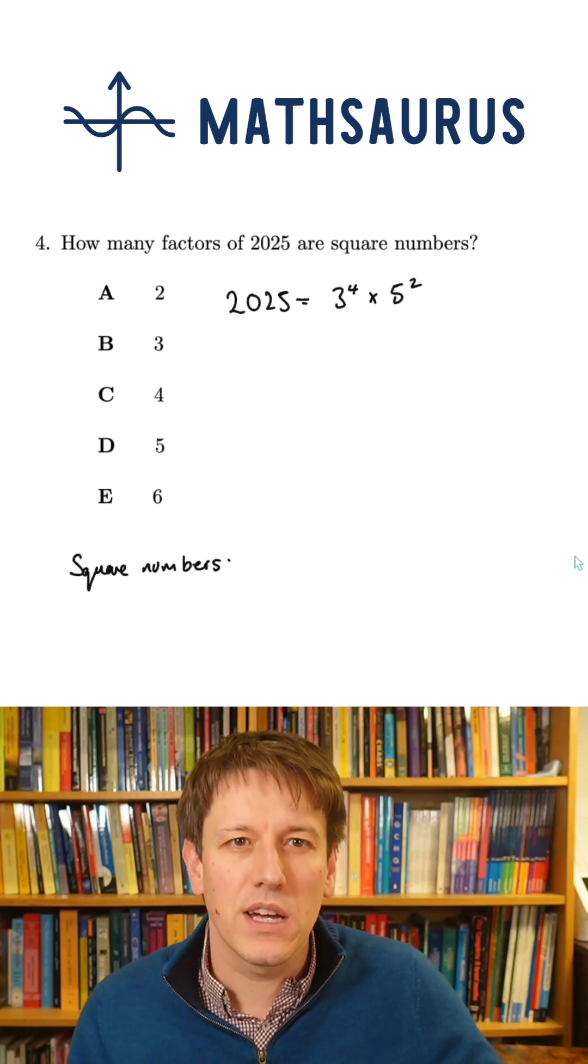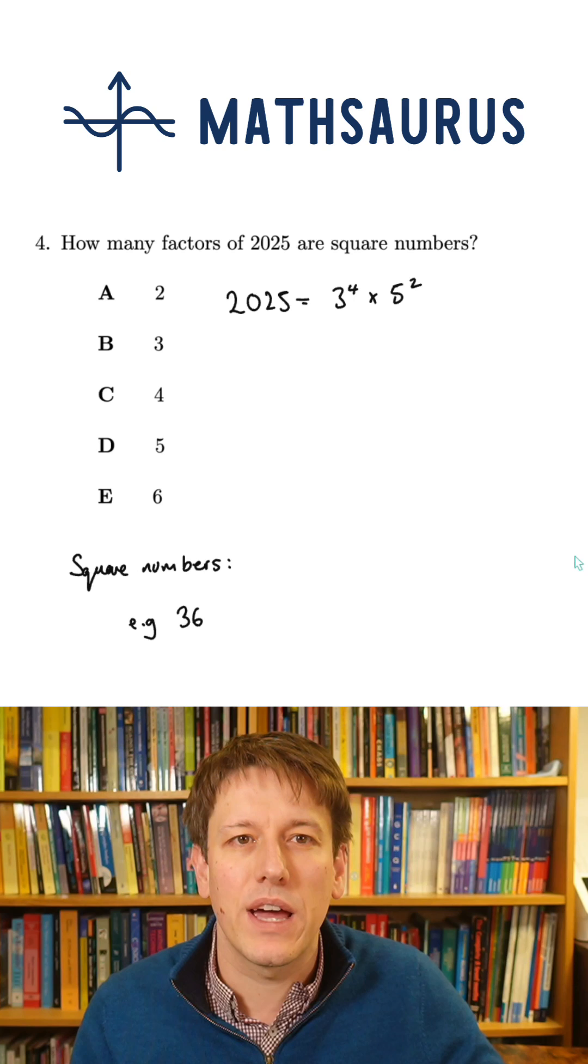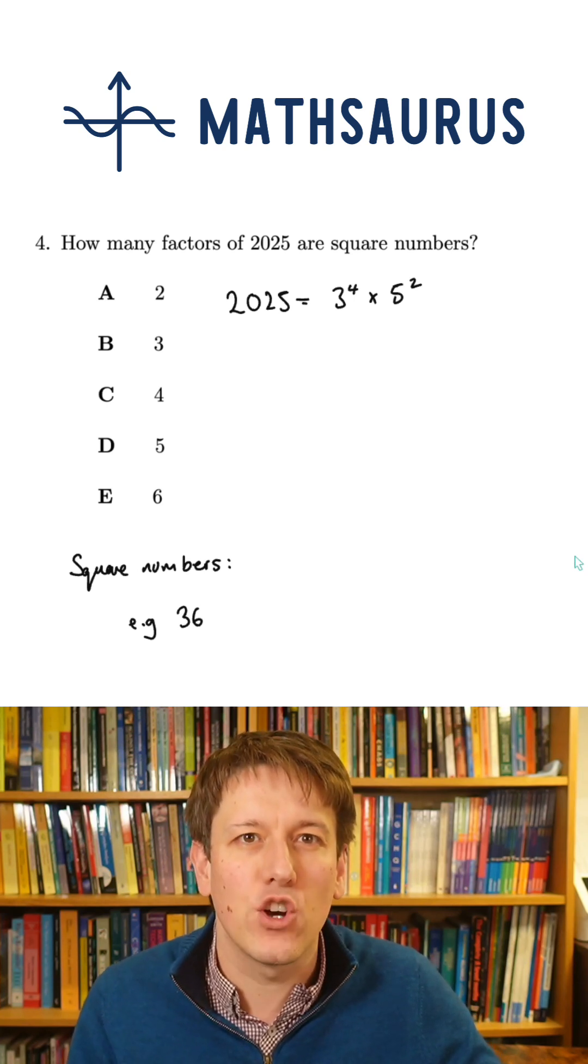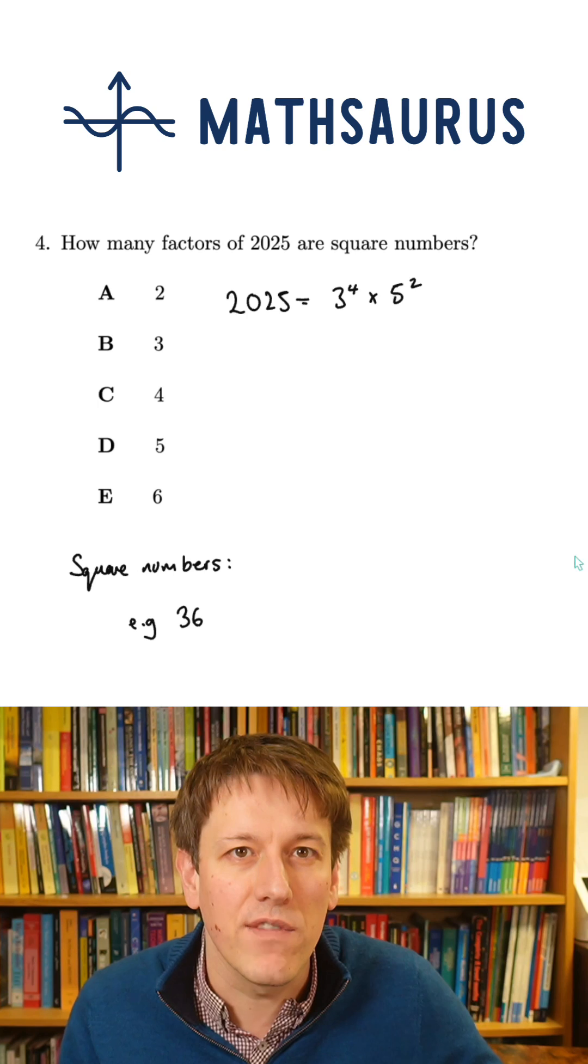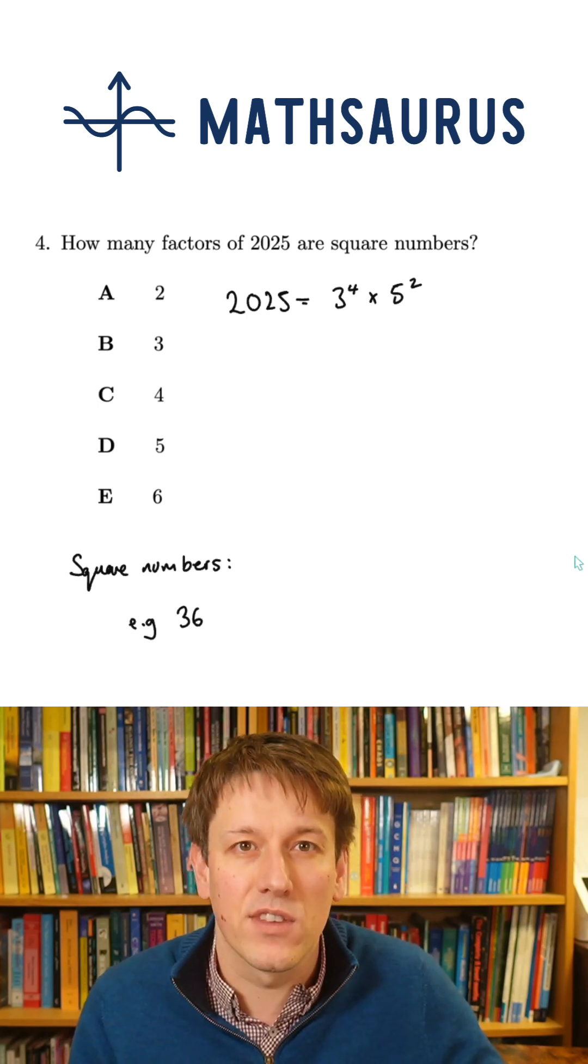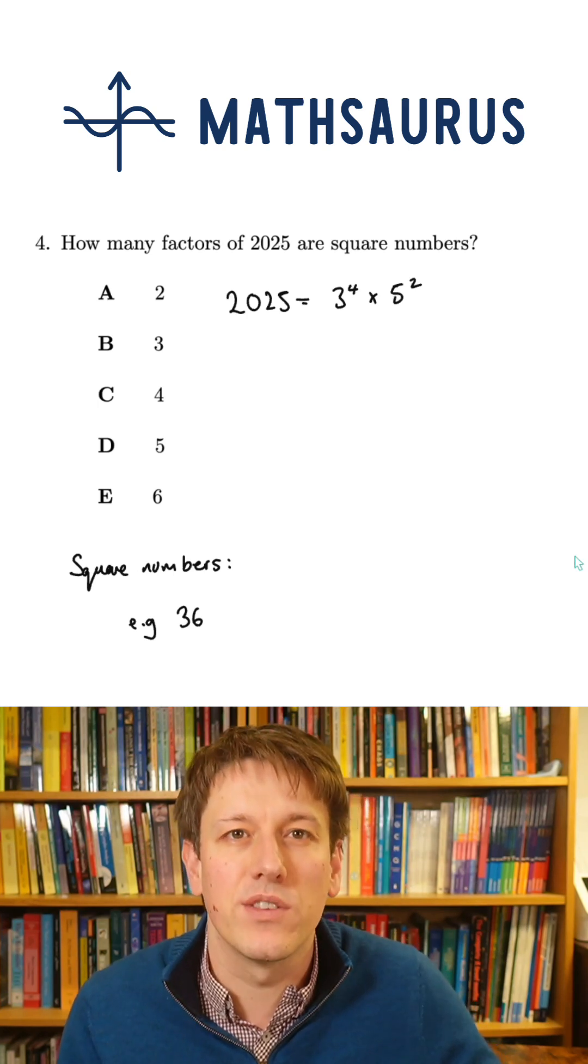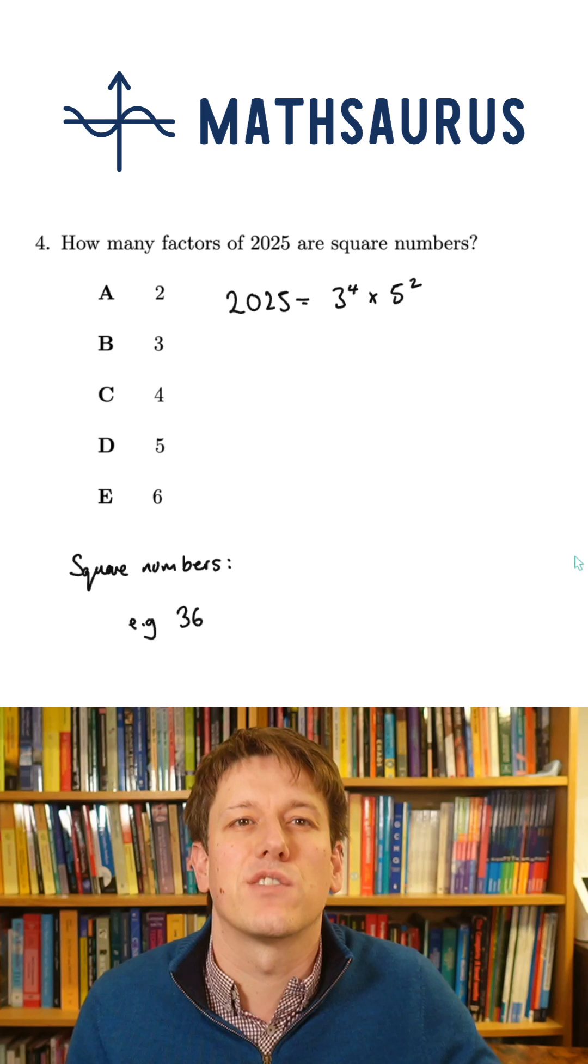Now we think, what do we need to get a square number as a factor? A factor will be any combination of powers of 3 and 5, where the powers are less than the ones in 2025. For example, 3 to the 1 times 5 squared would be a factor of 2025.